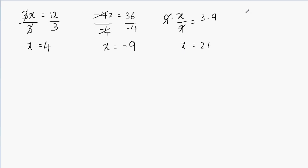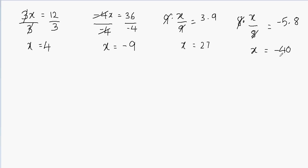The final example is x over 8 equals negative 5. Again, this is a fraction problem — the opposite of division is multiplication. We multiply both sides by the denominator, 8. The 8s cancel, leaving x on the left. On the right, negative 5 times 8 gives negative 40, because the product of a positive and negative number is negative. So x equals negative 40.